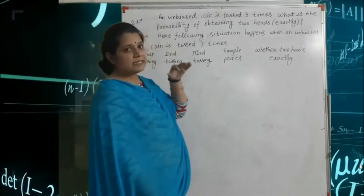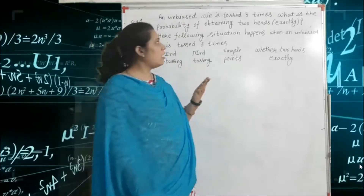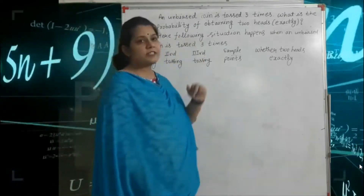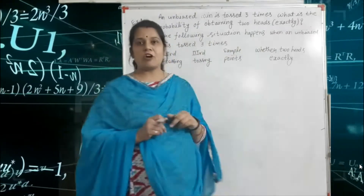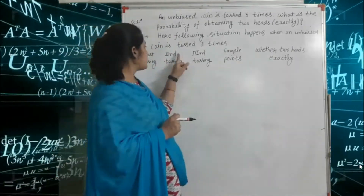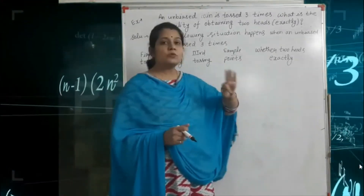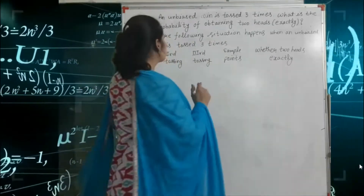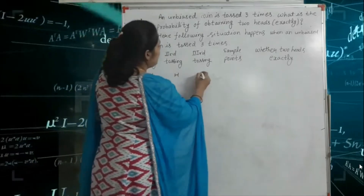When we toss three coins, or one coin is tossed three times, both are correct. The following situations happen. So here we list the sample points: first tossing, second tossing, third tossing. The first sample point is: first time head, second time head, third time head — that is HHH.